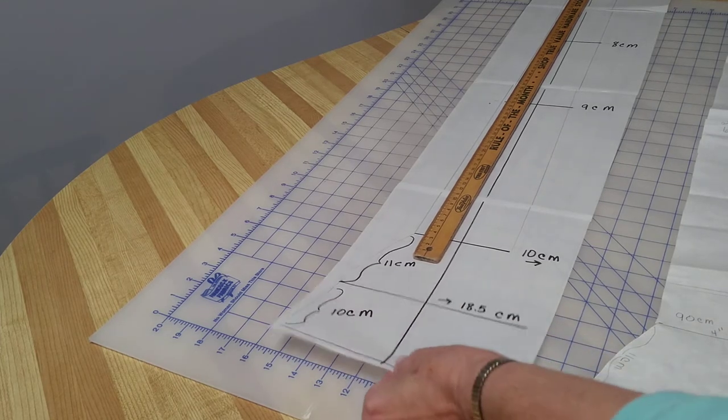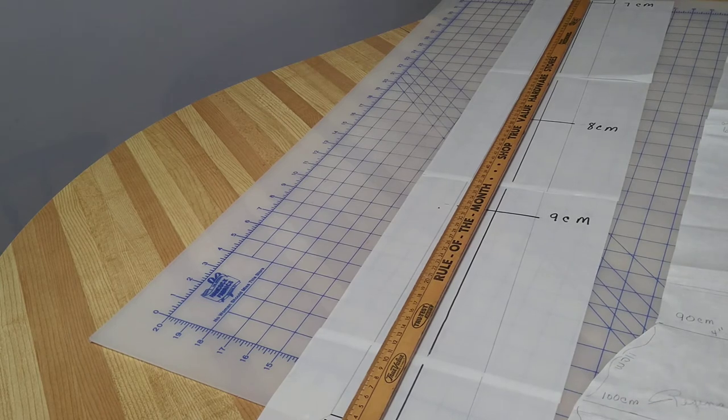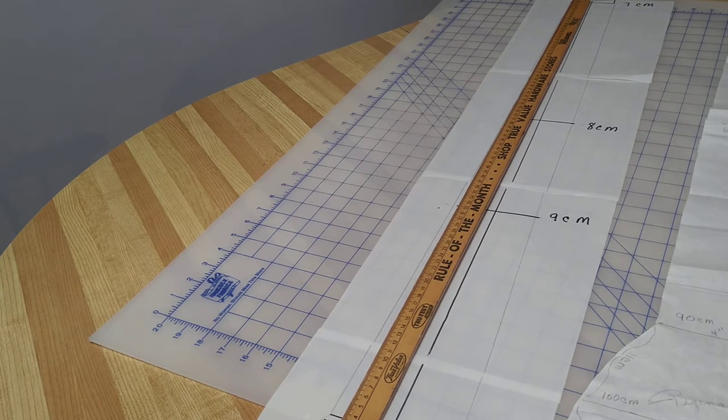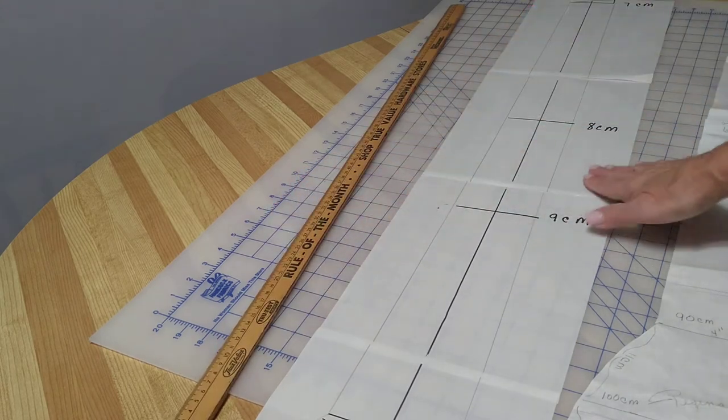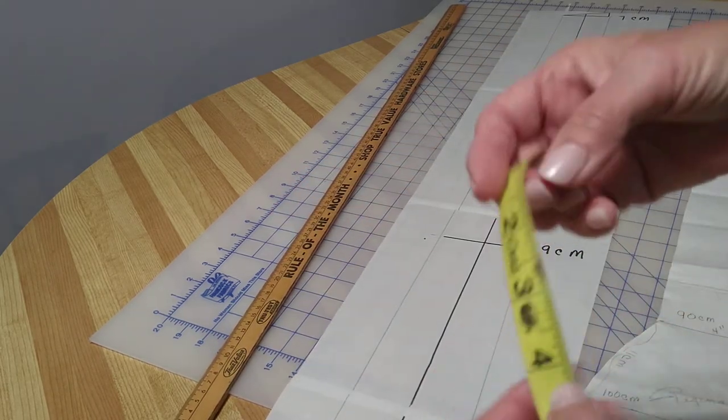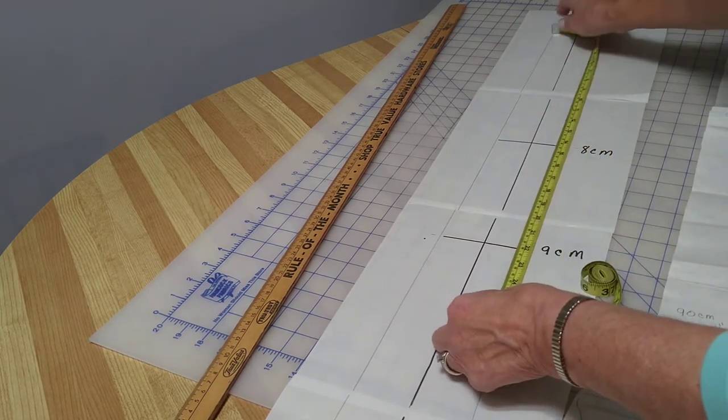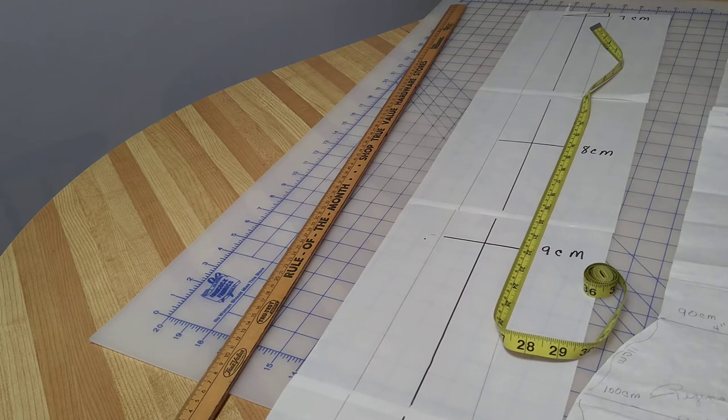Once you have that center line done, you could take a pencil and mark at the top where that line is going to be. So you're going to take your tape measure and make this line here in pencil 7 centimeters wide.